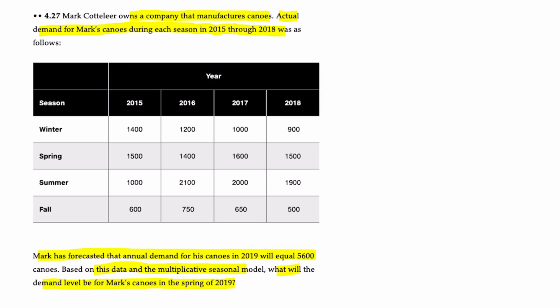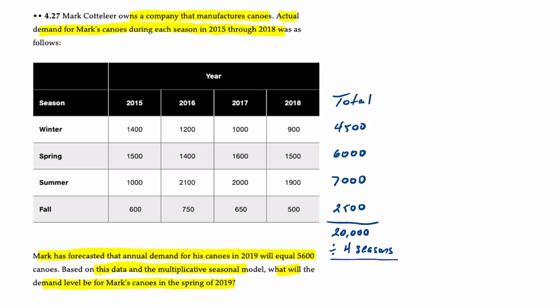There are a few ways you could approach a problem like this. The way I like to do it first is to come up with the totals for each season. The sum of all canoe sales for the winter season over all the years adds up to 4,500 canoes. We're adding up the sales for each season — not the annual sales. Over the last four years, total sales in spring were 6,000, in summer 7,000, and in fall 2,500. Adding all this together gives us a total of 20,000 canoe sales over the last four years. Dividing by the number of seasons gives us the overall average per season of 1,250 canoes — the overall seasonal average.